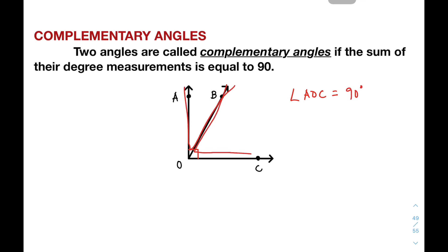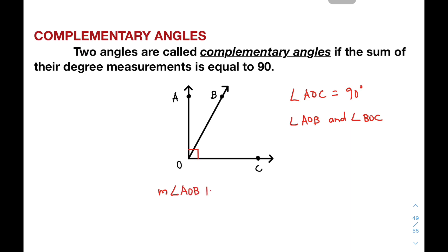Inside it, we have two smaller angles. The names of those angles are angle AOB and angle BOC. When you add the measurement of angle AOB plus the measurement of angle BOC, it will give you the sum of 90 degrees. So those angles form complementary angles. They are also called adjacent angles because they share a ray.